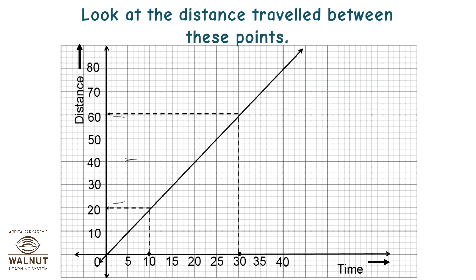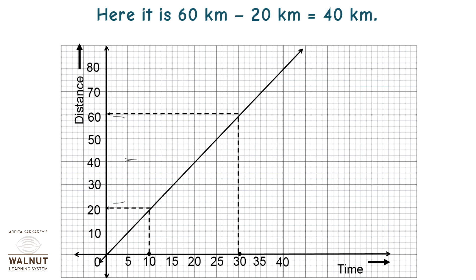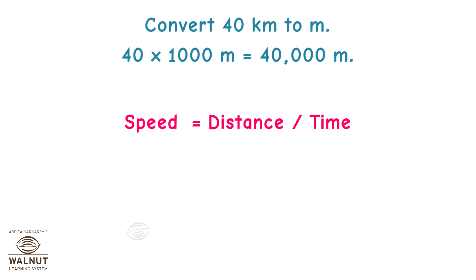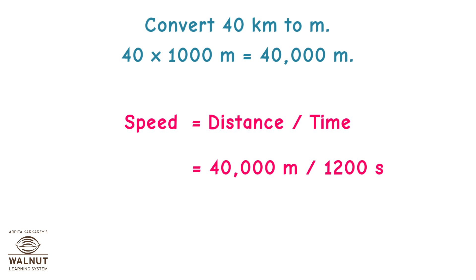Look at the distance travelled between these points: 60 kilometers minus 20 kilometers equals 40 kilometers. Convert 40 kilometers to meters — 40 multiplied by 1,000 meters equals 40,000 meters. Speed equals distance upon time. Therefore, speed equals 40,000 meters divided by 1,200 seconds, which equals 33.33 meters per second.